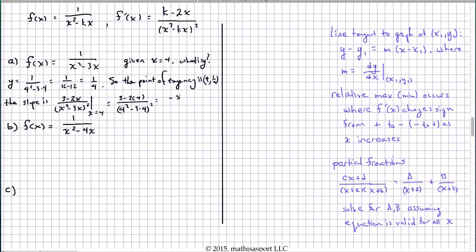We get negative 5 on top. 4 squared minus 3 times 4, we get 4 squared, so negative 5 sixteenths. I apologize that this has bled a little over into the part I had reserved for section B, but now we can conclude that the equation of the line is y minus 1 quarter equals negative 5 sixteenths times x minus 4.